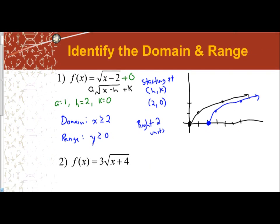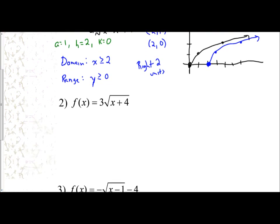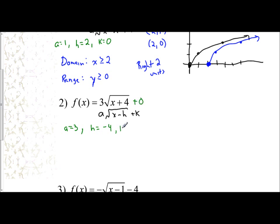Example two: f of x equals 3 times the square root of x plus 4. Using the transformation form, a is 3 — still positive but larger, meaning the graph increases faster. Since the formula says x minus h but this shows plus 4, h must be negative 4. There is nothing on the outside, so k is 0. My starting point is the coordinate (negative 4, 0). Domain: x is greater than or equal to negative 4. Range: since a is positive, y is greater than or equal to 0.